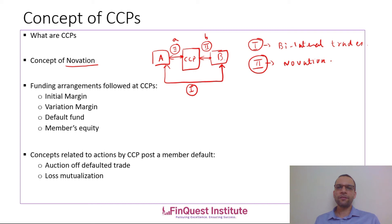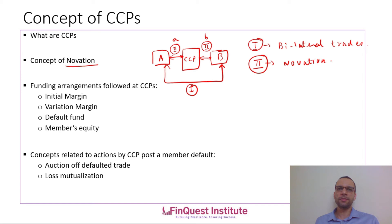Next is variation margin, similar in concept to exchange-traded variation margin. Transacting counterparties post variation margins on a day-to-day basis. CCPs have independent pricing engines to determine the variation margin amount required from each member daily. Additionally, every member must post a certain amount into a default fund created by the CCP as another layer of protection.